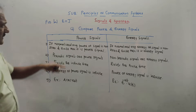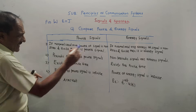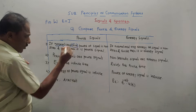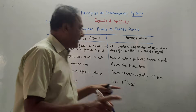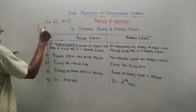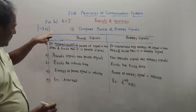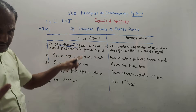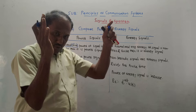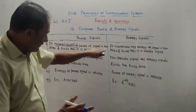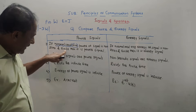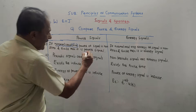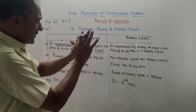Now let us discuss the comparison formally. The definition of a power signal: if the normalized average power of a signal is non-zero and finite, then it is a power signal. The word 'normalized' means taking the magnitude of the signal — for example, the magnitude of minus 3 Watts is 3. You take the magnitude and calculate the average; if that answer is non-zero and finite (not zero and not infinity), then it is a power signal.